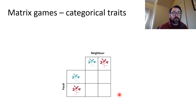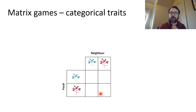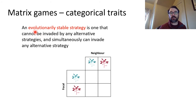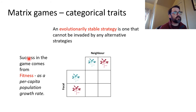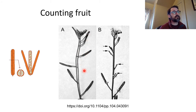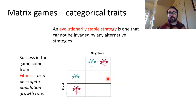As a reminder, matrix games are about categorical traits. Here we're thinking about whether a plant can close its stomata or not, and how that shapes interactions. An evolutionarily stable strategy, or ESS, is one that cannot be invaded by any alternative strategy but can itself invade alternatives. Success comes in the form of fitness — today we're actually going to count the fruits and write those numbers into the matrix.